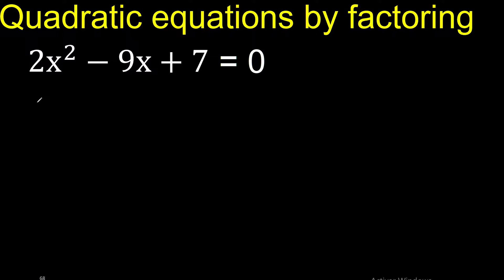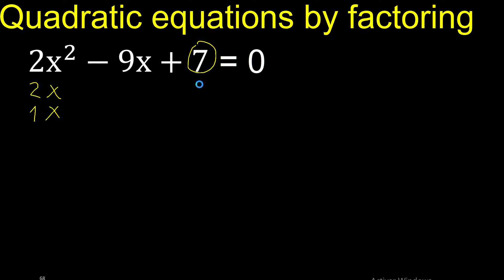2 numbers that multiply to give 2: 2 multiplied by 1 is 2. x multiplied by x is x squared. 2 numbers that multiply to give 7: 7 multiplied by 1, or 1 multiplied by 7.